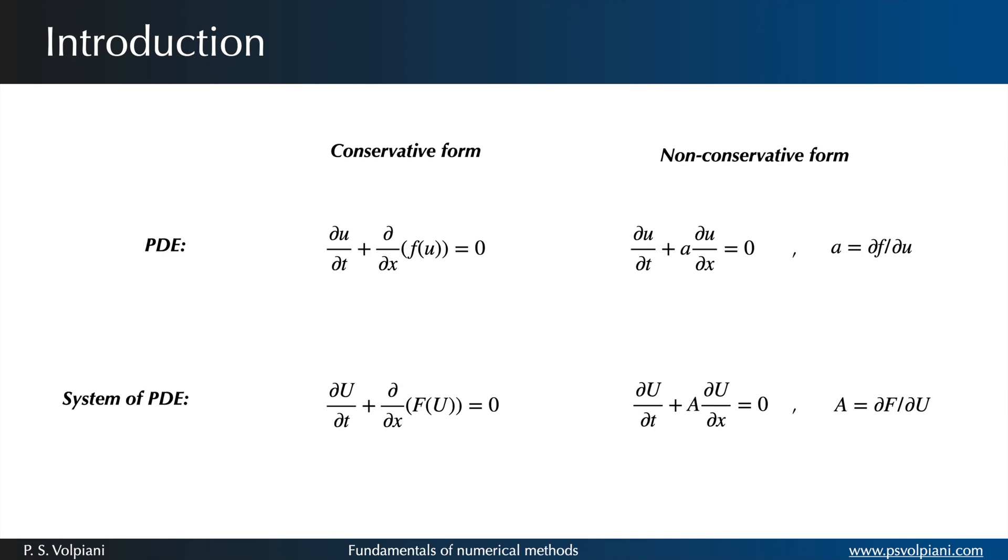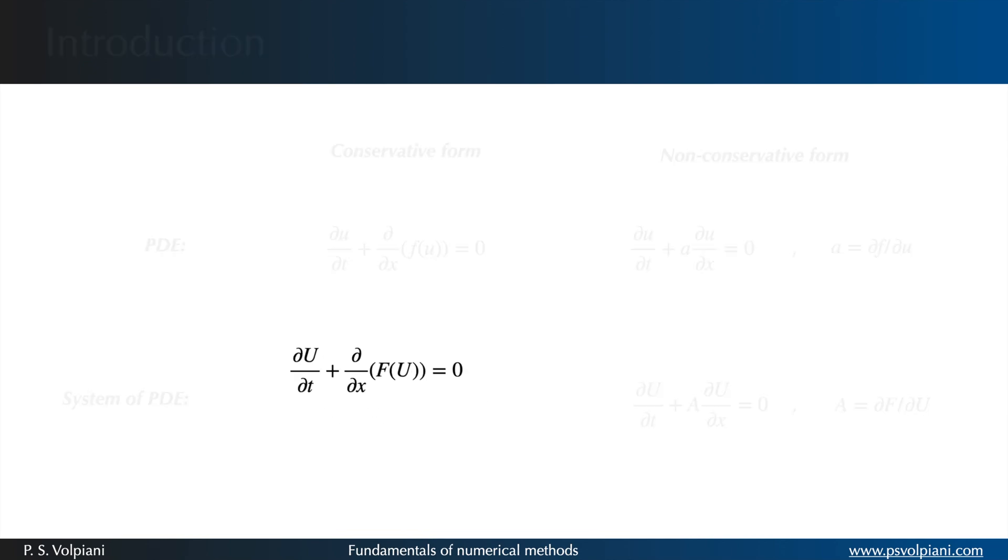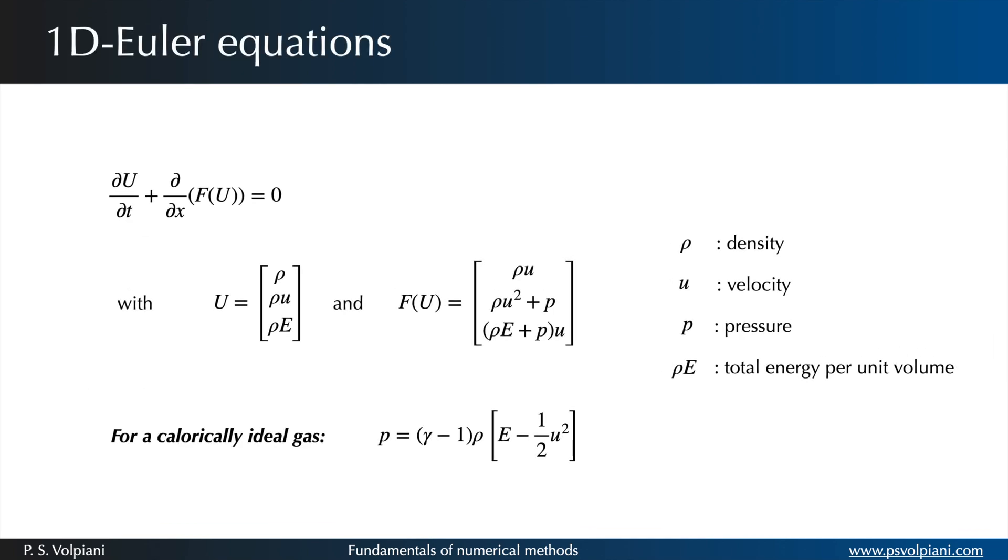In the case of the 1D Euler equations, our problem reads like this. Here, rho stands for the density, U the velocity, P the pressure, and rho E the total energy per unit volume.